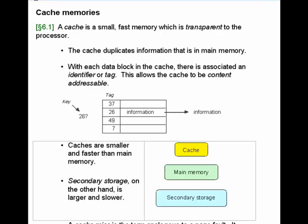Today we're going to be talking about cache memory. A cache is a small, fast memory which is transparent to the processor. The reason it's in the system is because it's a lot faster than main memory, although it's smaller. There's a trade-off between size and speed of access.